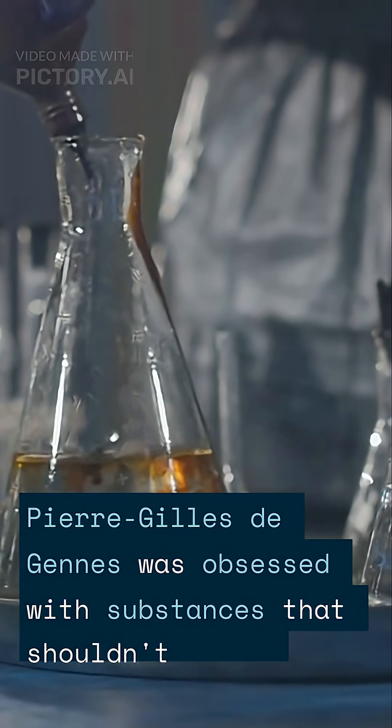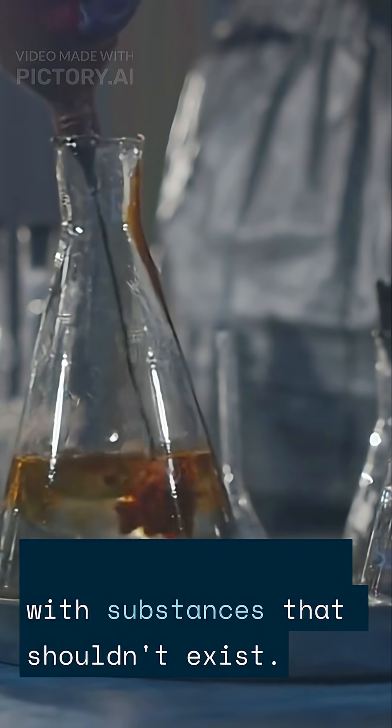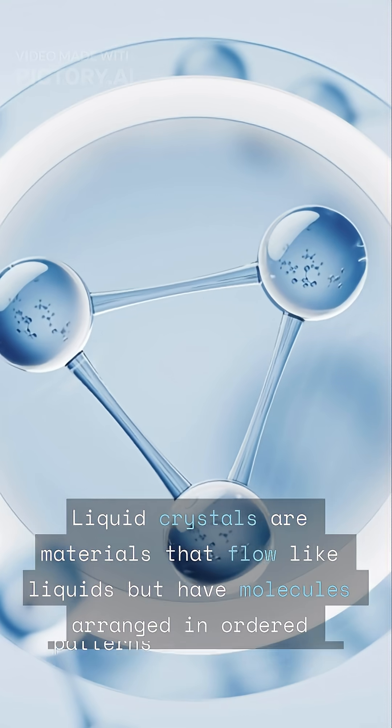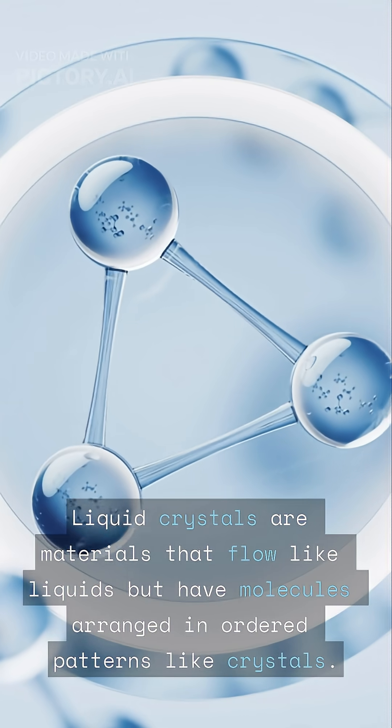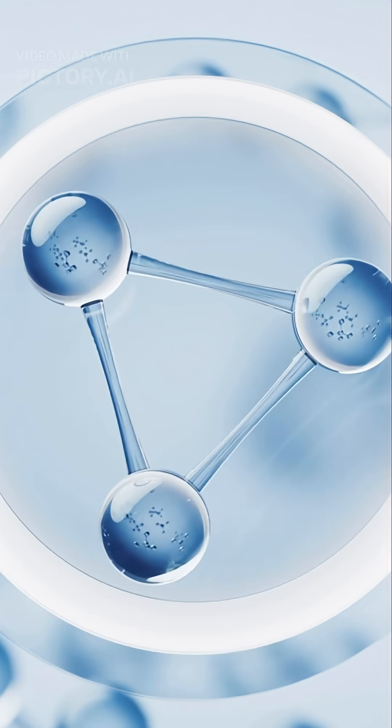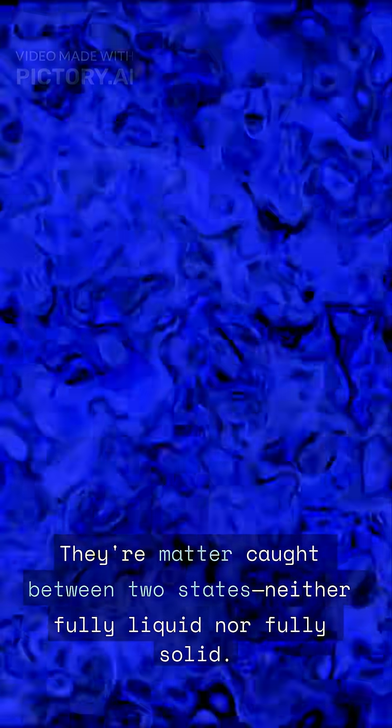Pierre-Gilles de Gennes was obsessed with substances that shouldn't exist. Liquid crystals are materials that flow like liquids but have molecules arranged in ordered patterns like crystals. They're matter caught between two states, neither fully liquid nor fully solid.